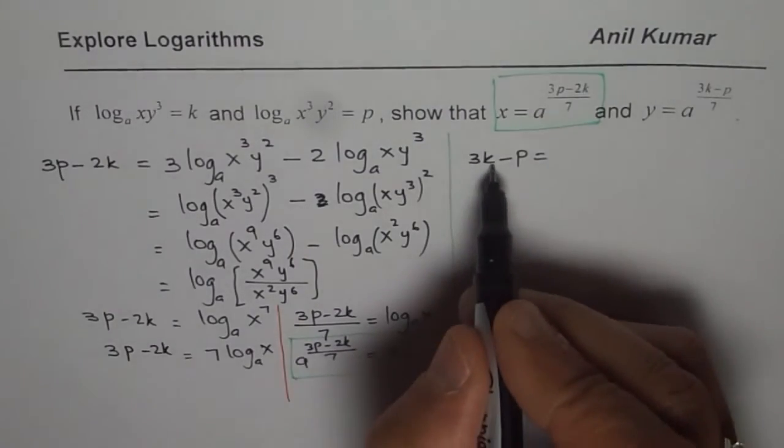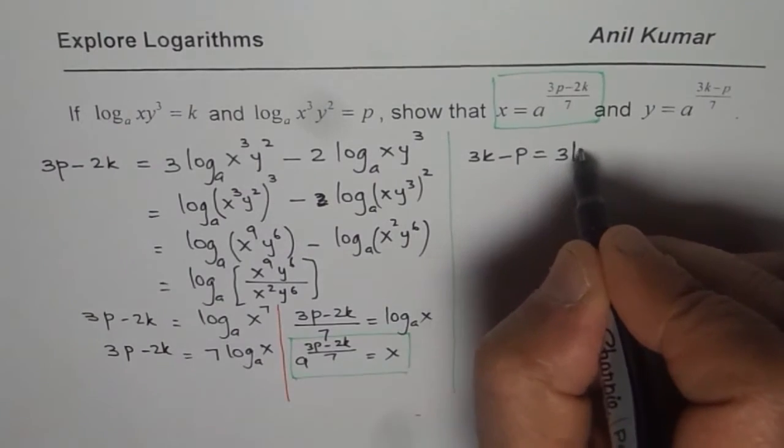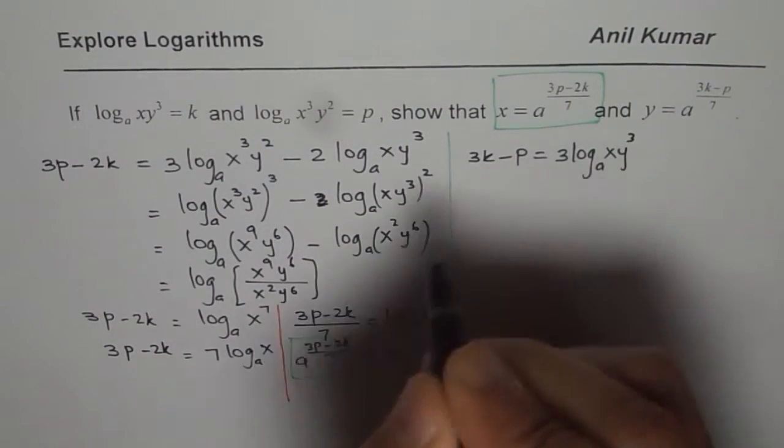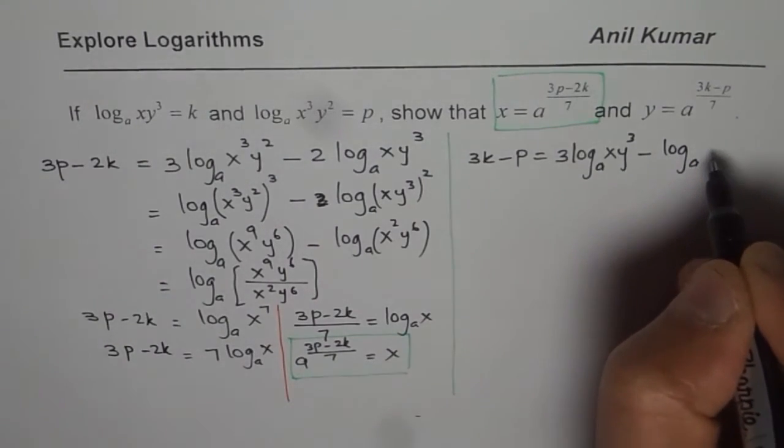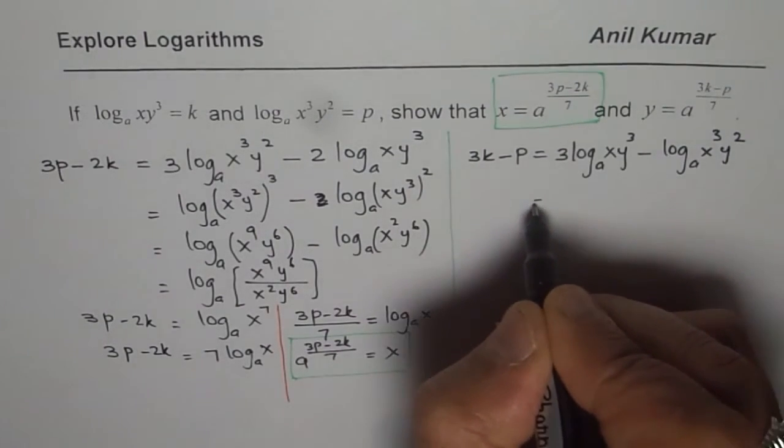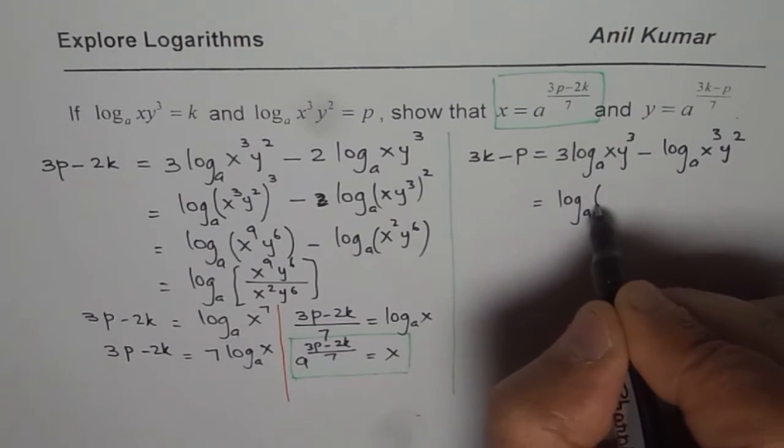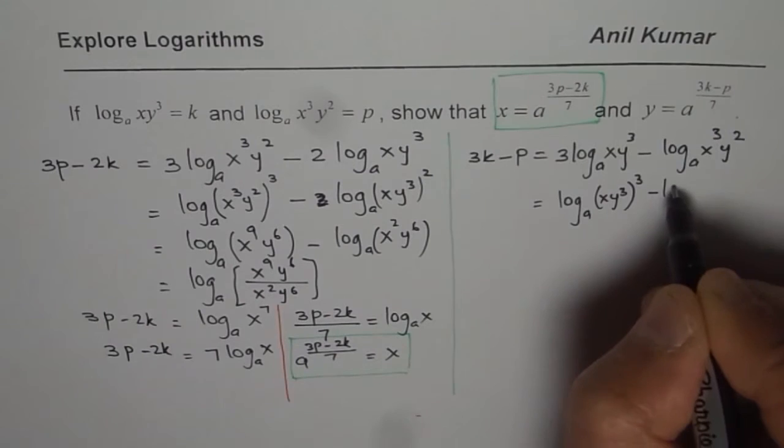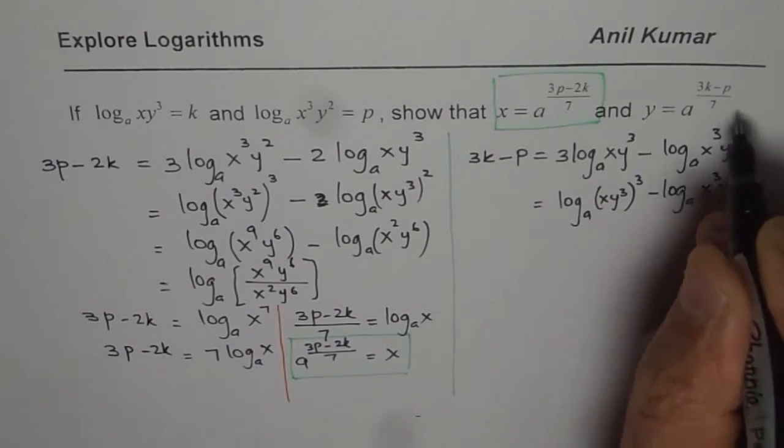3 times k, so 3 times k is 3 times log to the base A of xy³ minus p, and p is log to the base A of x³y². So this could be written as log to the base A of - so I will do cube of this - xy³ whole cube minus log to the base A of x³y².